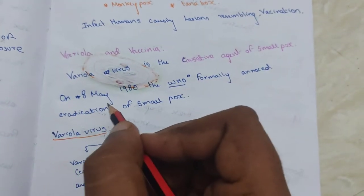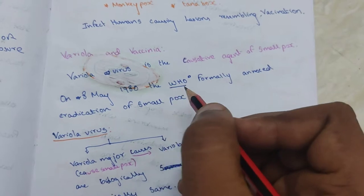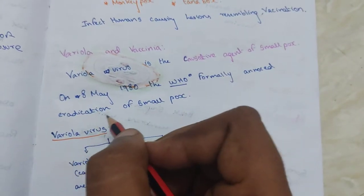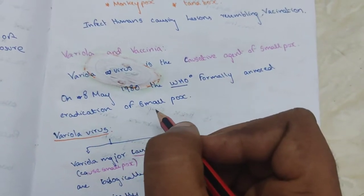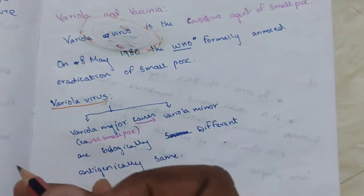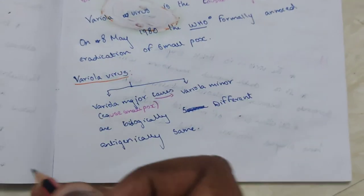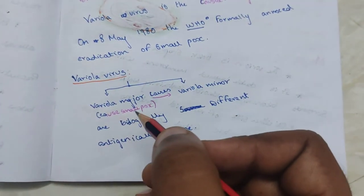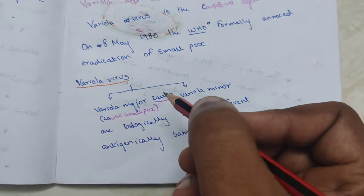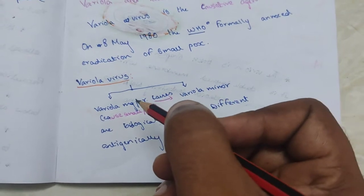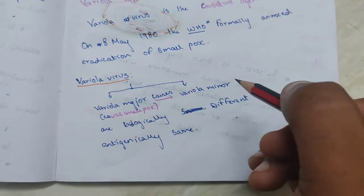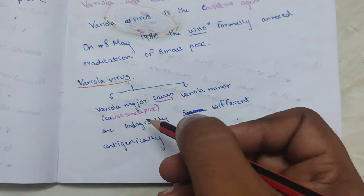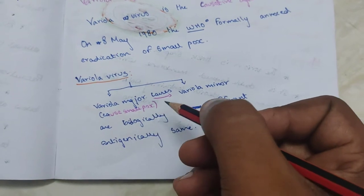On 8th May 1980, the WHO formally announced the eradication of smallpox. Variola virus is divided into variola major and variola minor. Variola major causes smallpox.